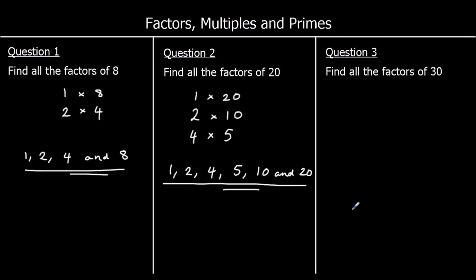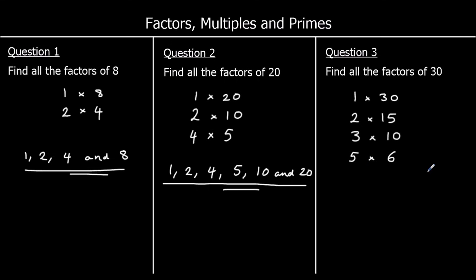And question 3: all the factors of 30. So we've got 1 times 30. It's in the 2 times table: 2 times 15. And the 3 times table: 3 times 10. It's not in the 4 times table, but is in the 5 times table: 5 times 6. So that's all of them — 1, 2, 3, 5, 6, 10, 15, and 30.